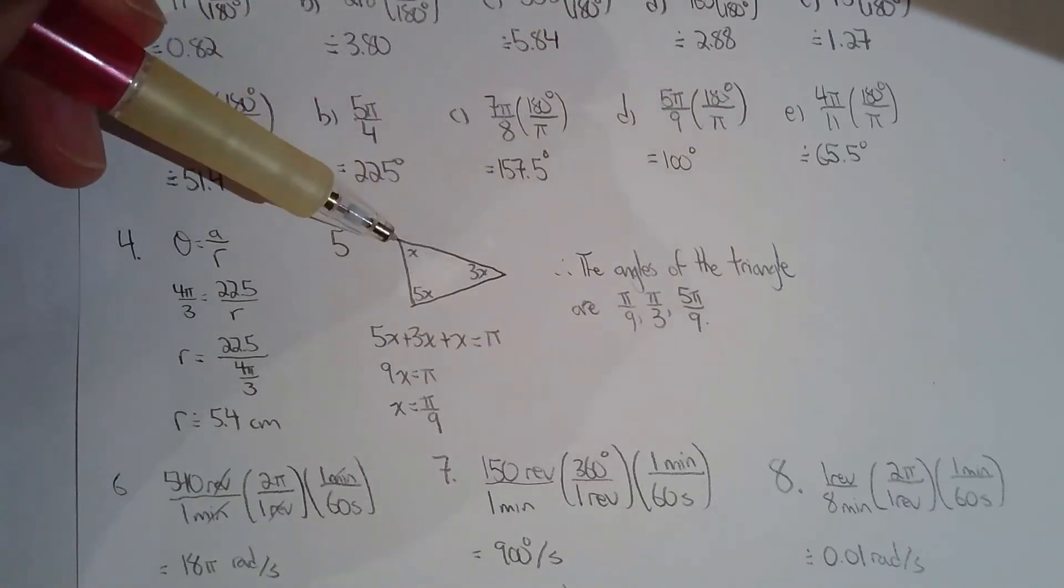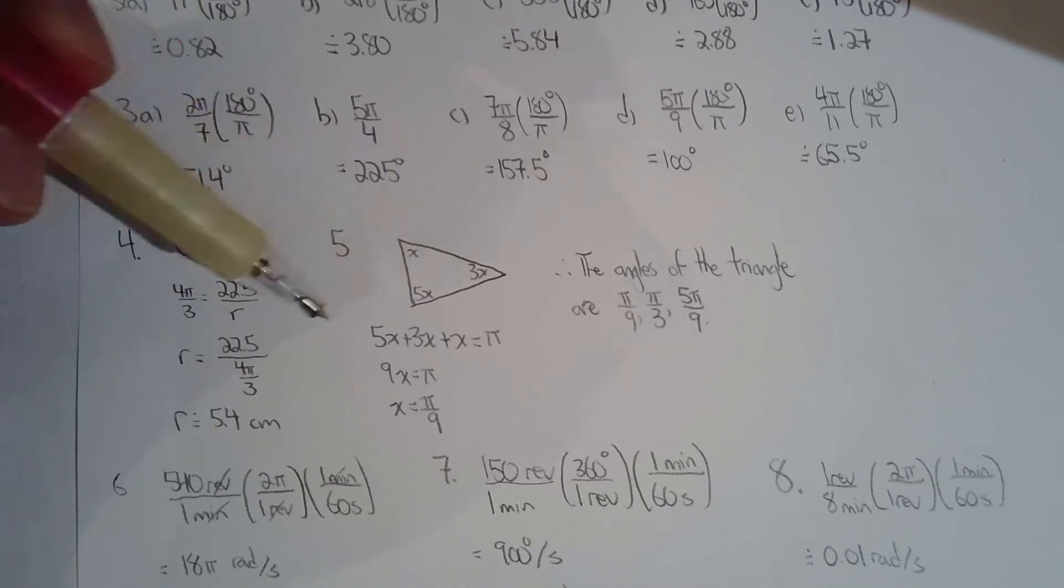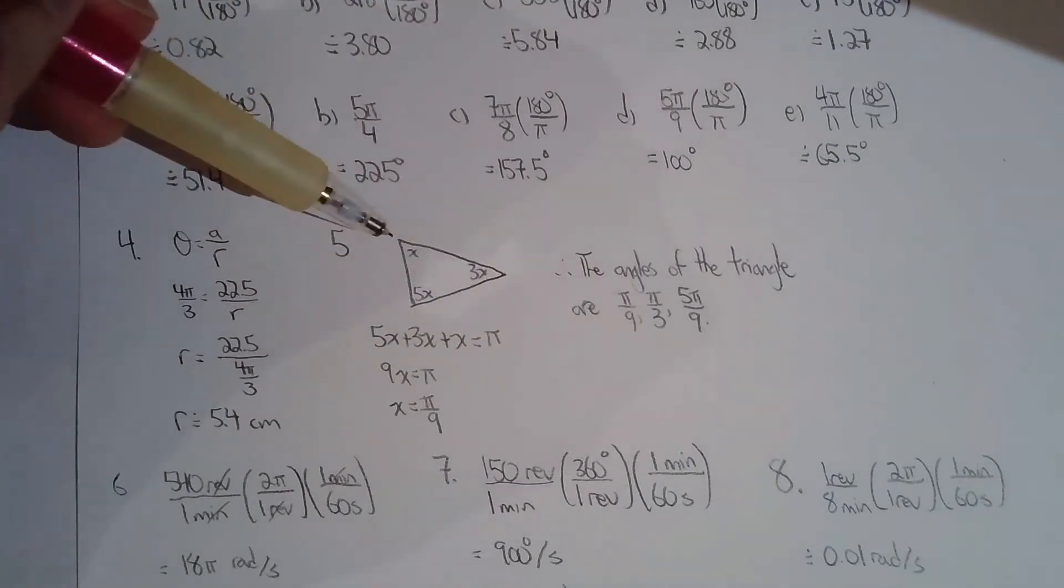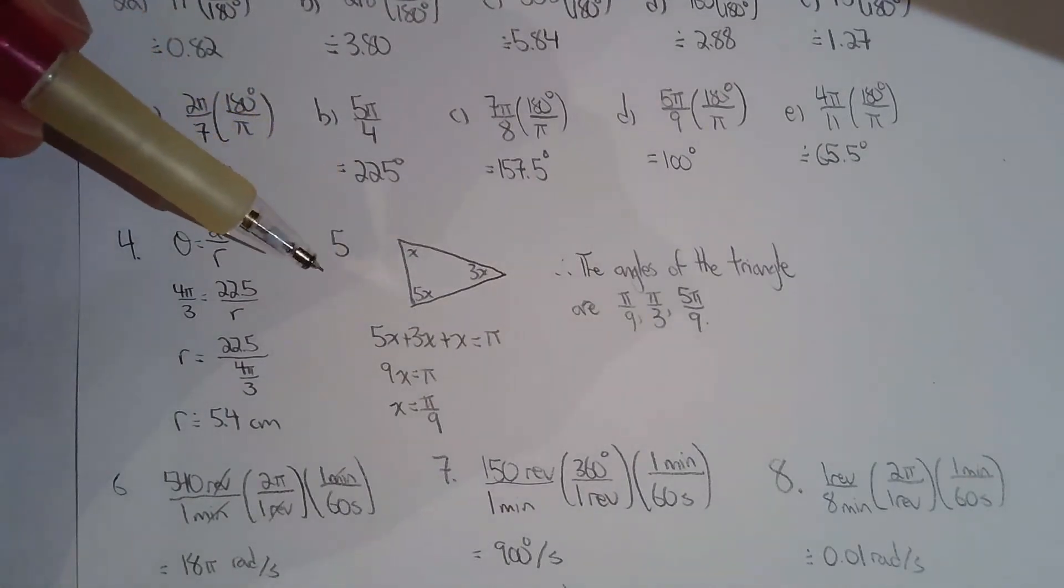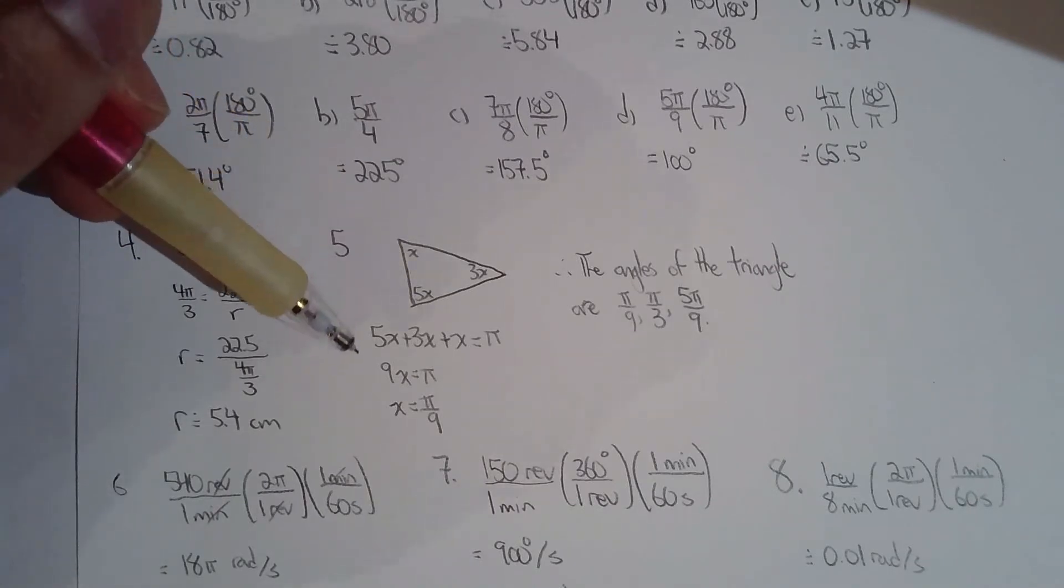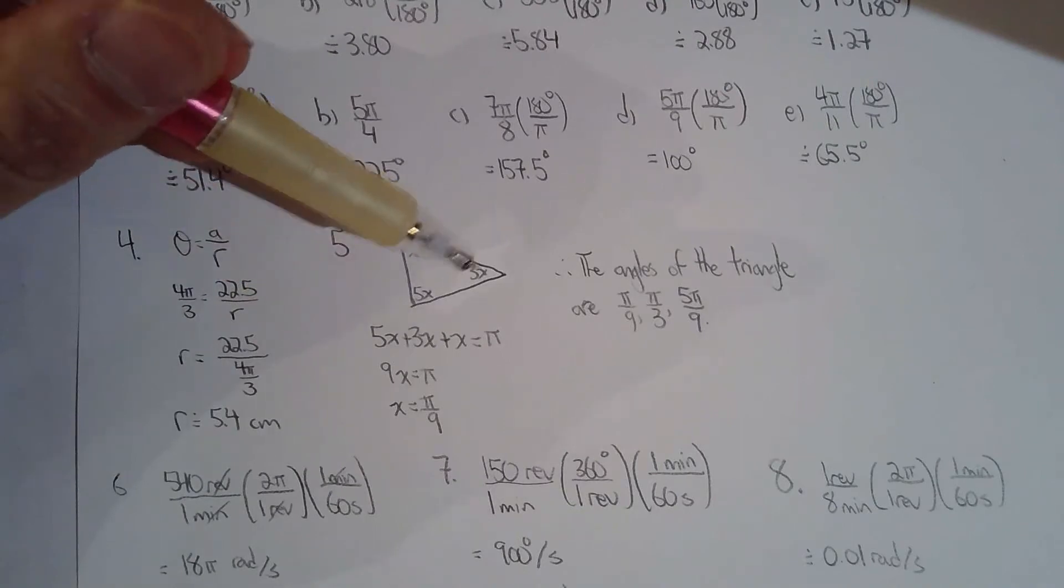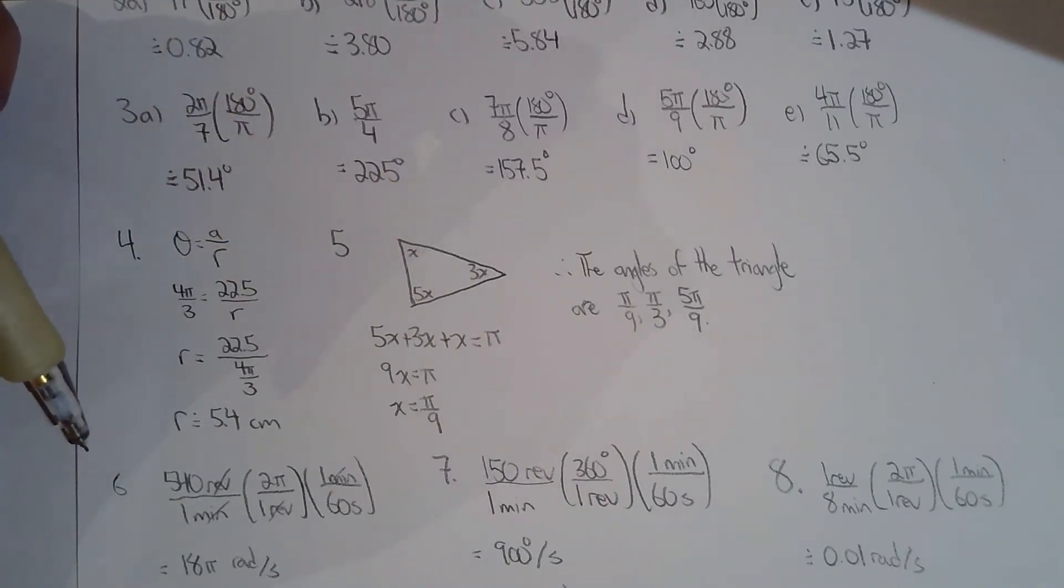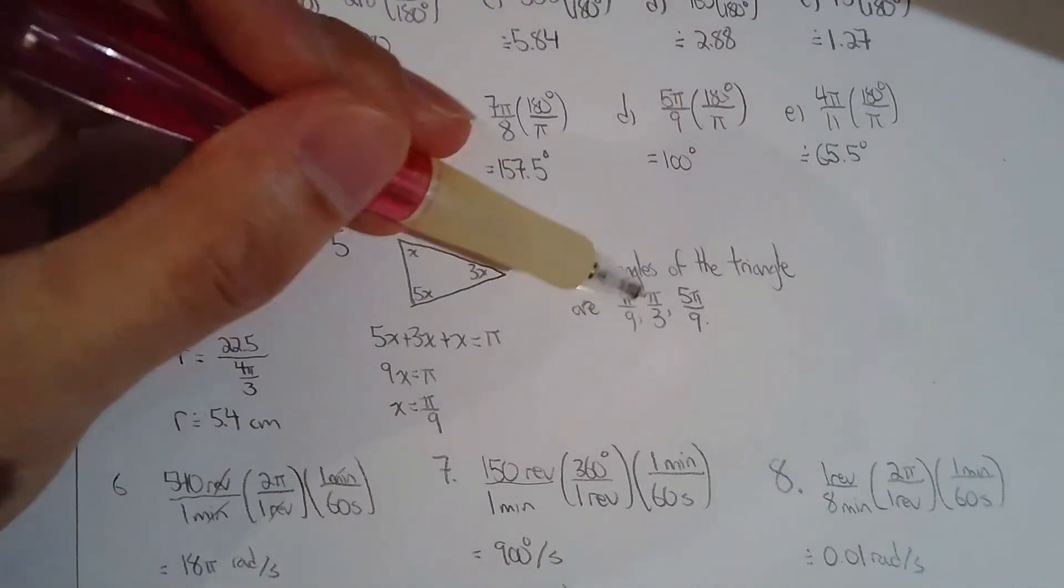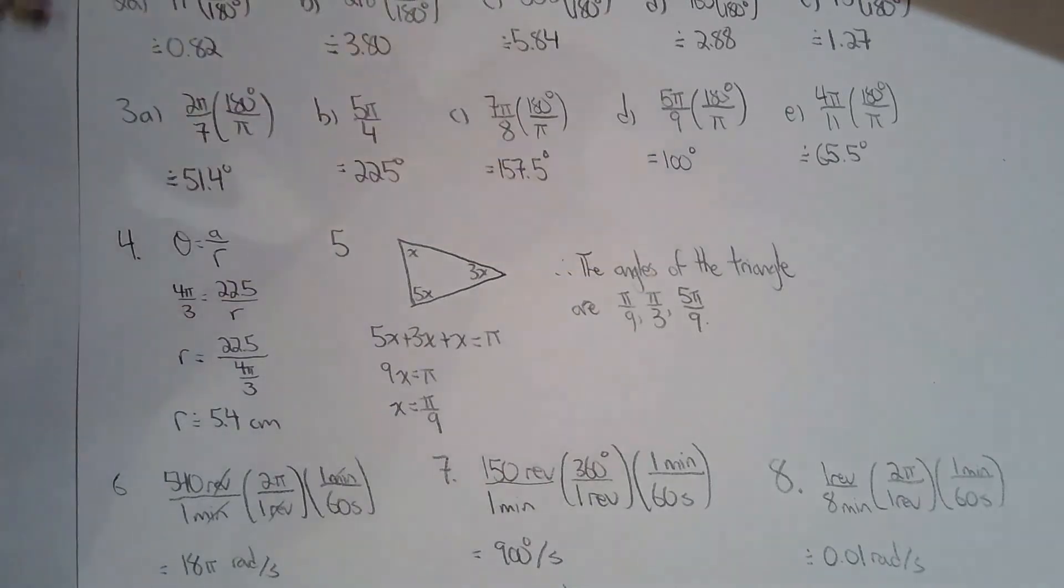Question 5, you're given the three interior angles of the triangle: x, 3x, and 5x. It's worded differently in the question, but that's essentially what they're saying. The sum of the interior angles of the triangle add up to 180 degrees, which is the same as pi radians. Solve for x, the smallest of the three interior angles, and then once you have x, you can solve for the other two angles of the triangle, which are pi over 3 (because you had originally 3 pi over 9, but that simplifies to pi over 3) and 5 pi over 9.